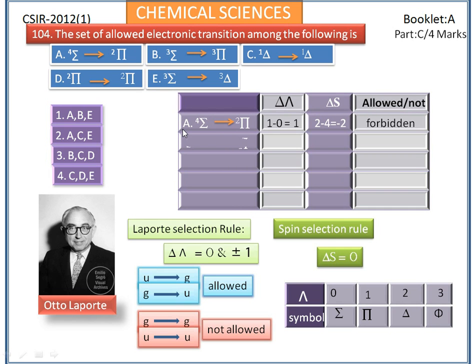Next, consider option B: triplet Σ to triplet Π. Here delta lambda = 1 and delta S = 0. So it is an allowed transition, since it obeys both the Laporte selection rule and the spin selection rule.